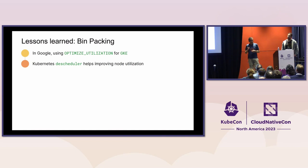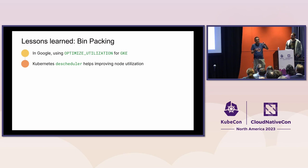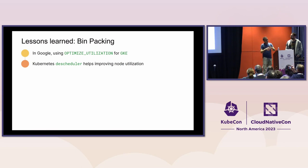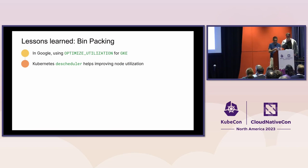A tool that helps us — certainly not a silver bullet, and you need to understand how it works — is the Descheduler. The Descheduler observes how well nodes are being used, and using strategies like high node utilization, if it detects an underutilized node, it will evict pods to be able to kill that node. But you need to understand it carefully — it's not a silver bullet and we've had some incidents from misconfiguration.